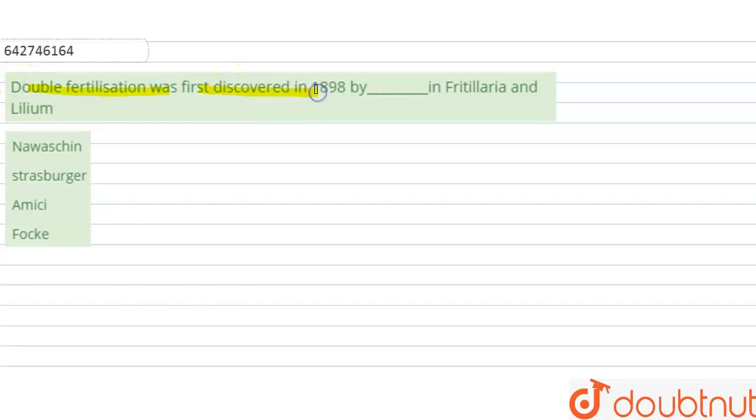was first discovered in 1898 by [blank] in Fritillaria and Lilium. So we have to tell the name of the scientist which discovered the double fertilization in Fritillaria and Lilium. There are four options: Navashin, Strassburger, Amici, and Fockel. So what